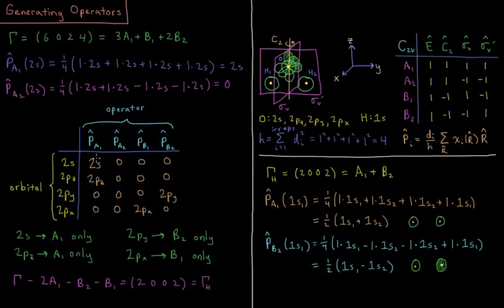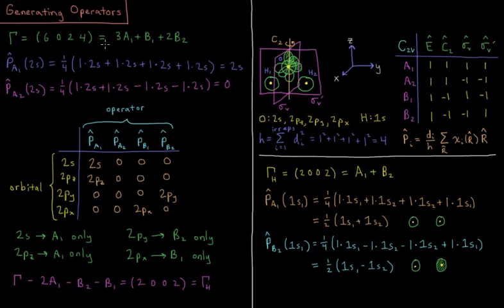In the previous video, we discussed how to find that the reducible representation of these six orbitals was 6, 0, 2, 4 under these four symmetry operations, and then we used the reduction formula to decompose that into its EREPs, which is 3A1 plus 1B1 plus 2B2.